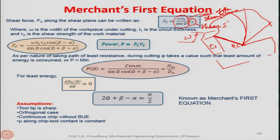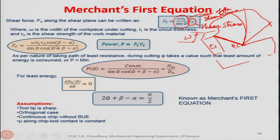Here, τs is the shear stress applied during the process; W is the width of the work piece under cutting; T1 is the uncut thickness; and τs is the shear strength of the work material. Substituting the value of Fs into the Fc expression gives us Fc. Power P equals Fc times Vc, where Vc = π·d·n.